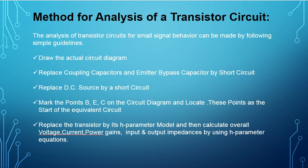We can also analyze in the small signal high frequency analysis. What are the steps to analyze in the small signal low frequency or high frequency case? First, we have to draw the actual circuit diagram — that is step one. Next, since this is AC analysis, the capacitors present in the circuit — coupling capacitors and the bypass capacitor — have to be short-circuited. Next, we have to replace the DC source by short circuit.